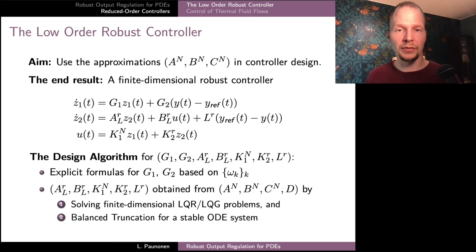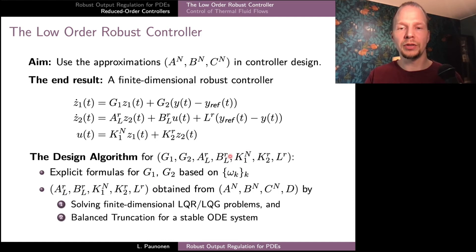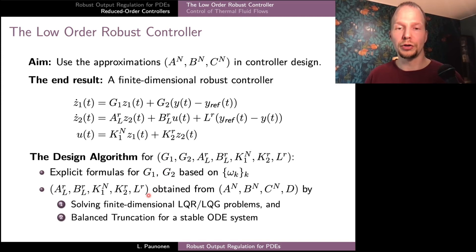I won't go through all the details of the design algorithm — these can be found in the papers, and I also have a separate YouTube video commenting on it. I'll just highlight the two most important aspects. First, the matrices G1 and G2 have very explicit formulas based only on the knowledge of the frequencies of the reference and disturbance signals and the number of outputs our system has. The final five parameters of our controller are obtained based on the Galerkin approximation of our PDE model, by first solving some finite-dimensional linear quadratic control and filter equations, and then applying balanced truncation to a specific stable ODE system. Both of these steps can be done efficiently within MATLAB with built-in routines.